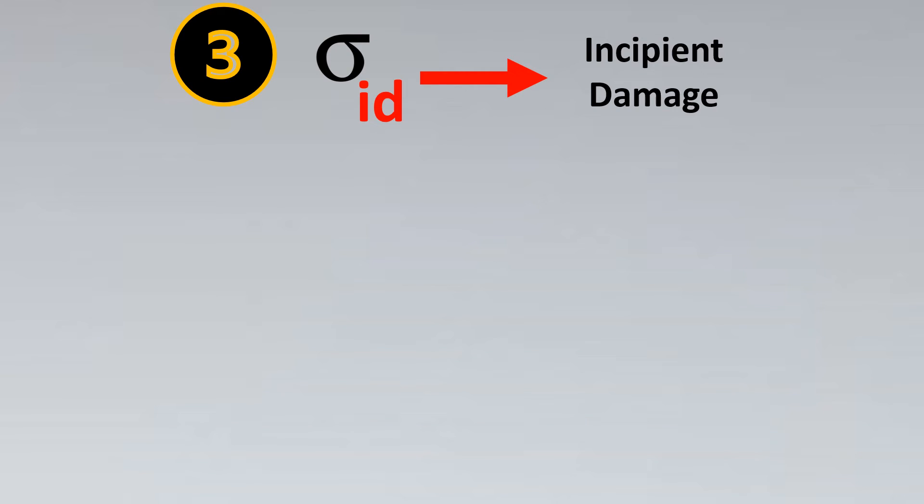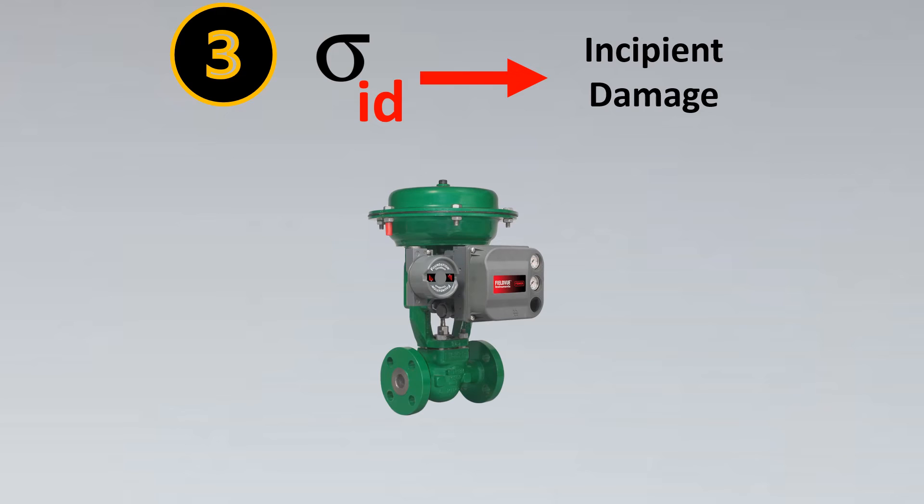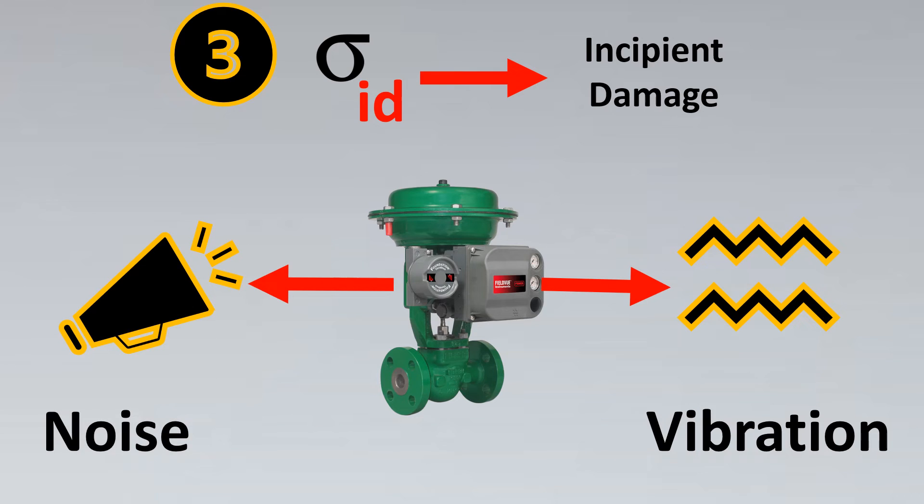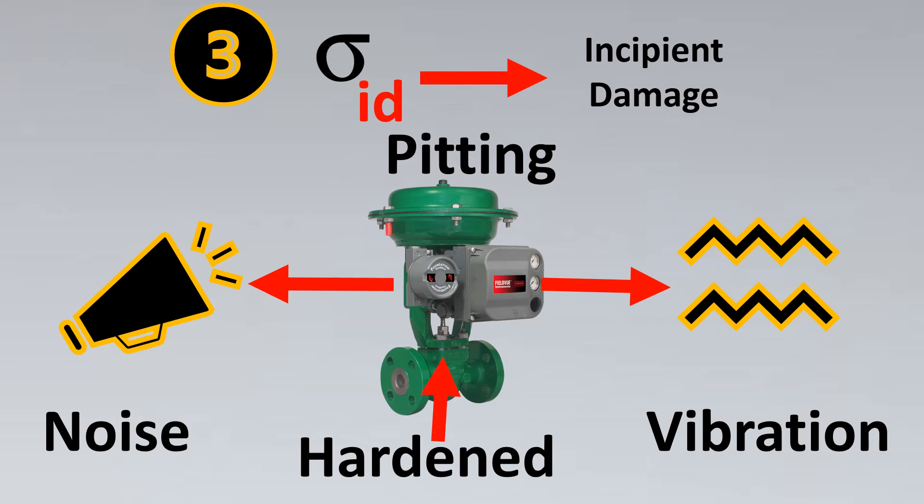Now let's look into the third term, which is ID. Here is where you need to get more serious and take more precaution because ID stands for incipient damage. This incipient word means start, so this is the start of damage to the valve. Your valve can get damaged - the vibrations are present and the noise is present and the level is high. For such cases, there are chances of pitting, and you have to use some special precautions like hardening the trim material of the valve, otherwise your valve might not be able to sustain and would get damaged.